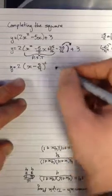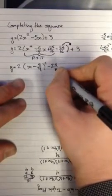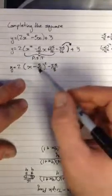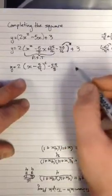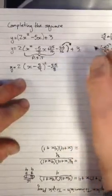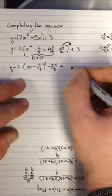So we had positive 2 times negative 25 over 16. That's gonna give us negative 25 over 8. So 25 over 16 times 2 is negative 25 over 8. And we're gonna need to add 3 to that, so instead of just writing this plus 3, I'm gonna write 3 with a denominator of 8, so that'll be plus something over 8.